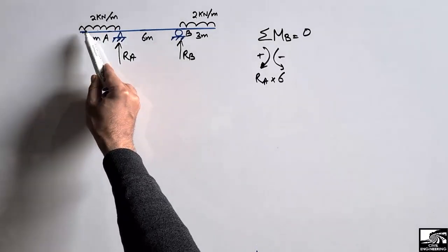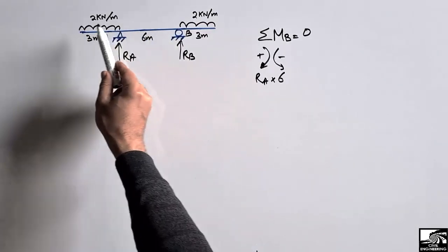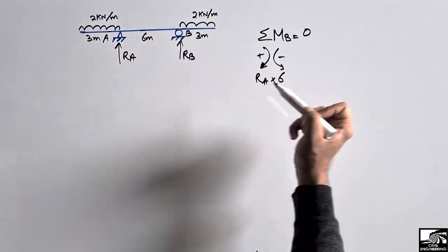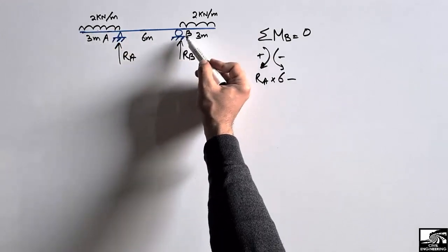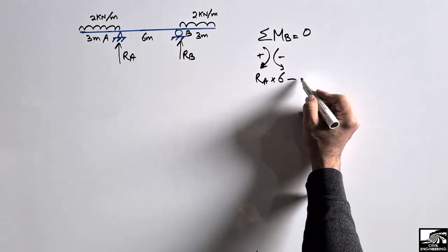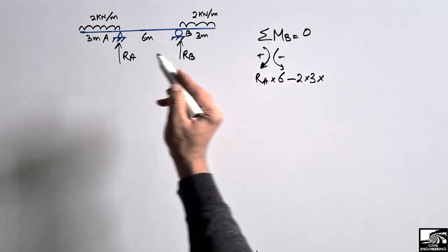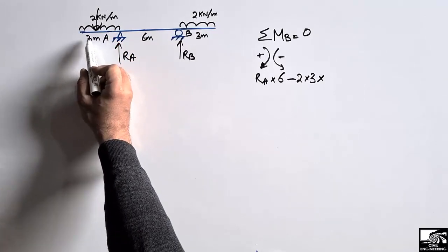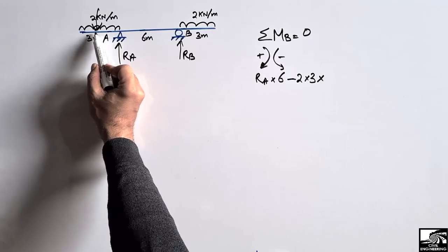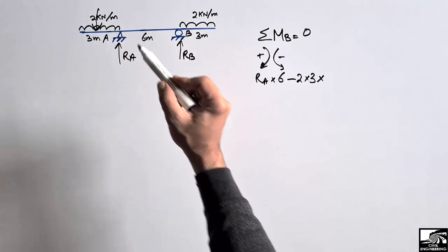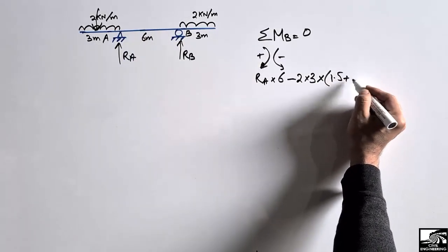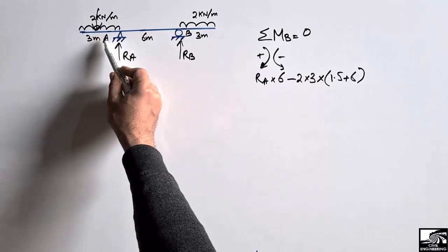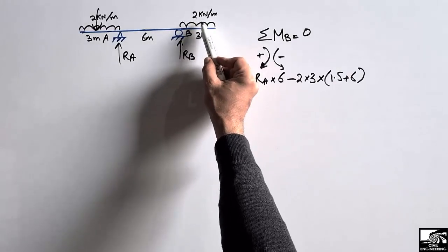The left distributed load also creates a moment about point B. This is a 2 kilonewton per meter load over 3 meters, so the equivalent concentrated load is 2 × 3. This load creates an anticlockwise moment about point B, so it is negative: minus 2 × 3 multiplied by its moment arm. The load acts at the center of the 3 meter span, so the moment arm is 1.5 meters plus 6 meters, giving a total moment arm of 7.5 meters.